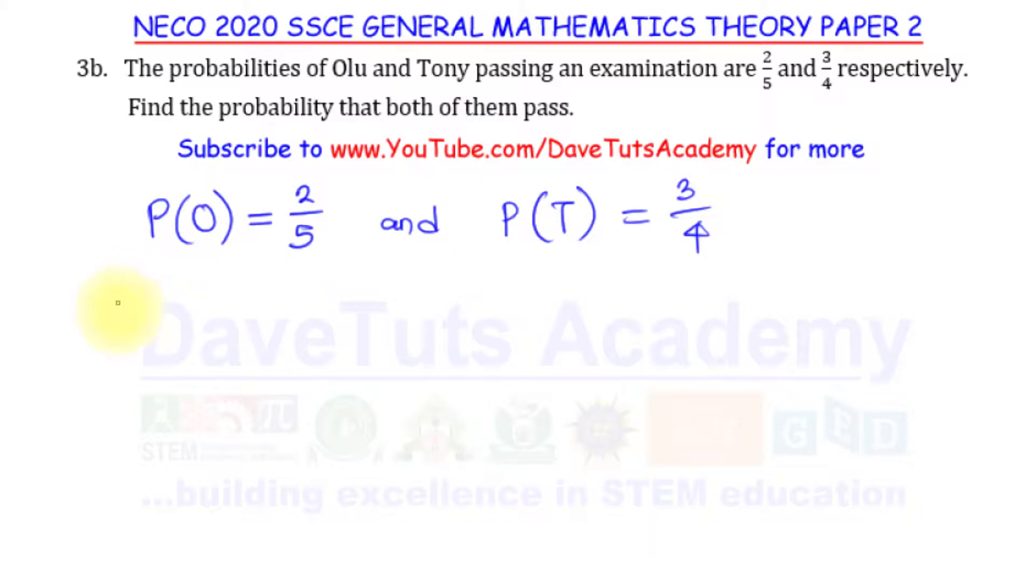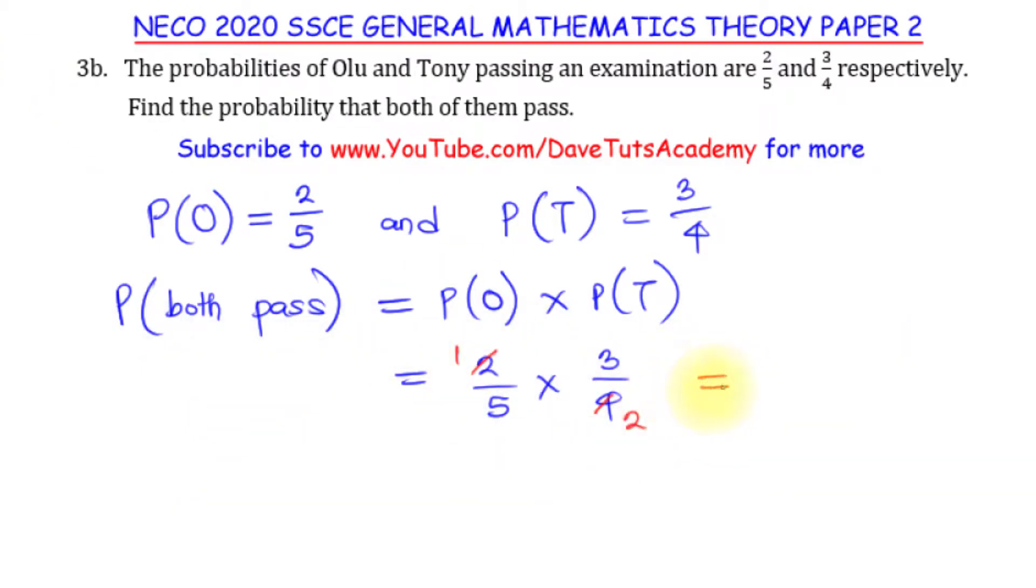The probability that both pass is the product of these two, so it's P(O) multiplied by P(T). That will be 2/5 × 3/4. We can simplify: 2 goes into 4, leaving 1 × 3 as the numerator which is 3, and 5 × 2 as the denominator which is 10. So the probability that both pass is 3/10.